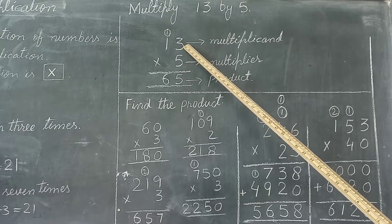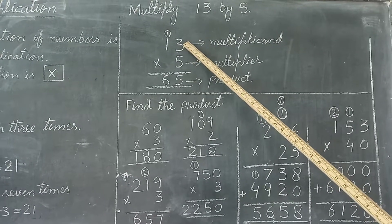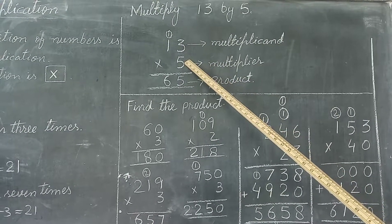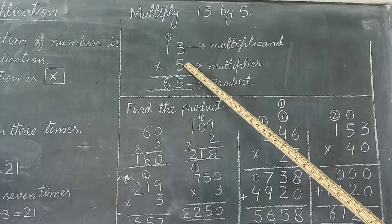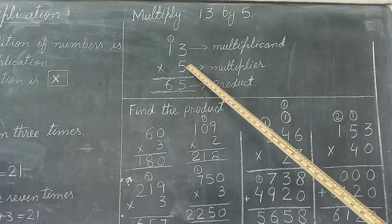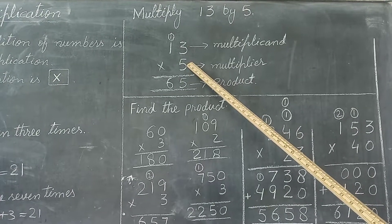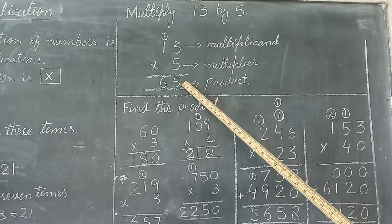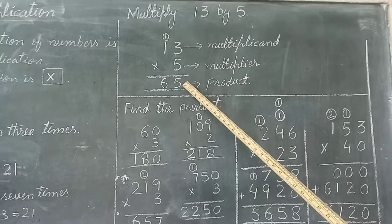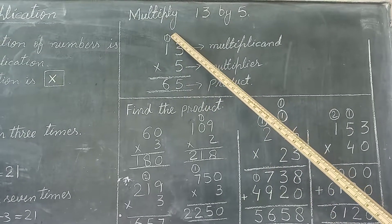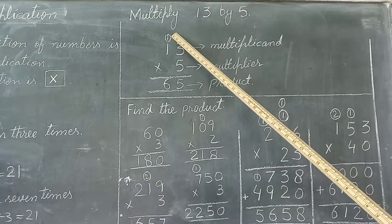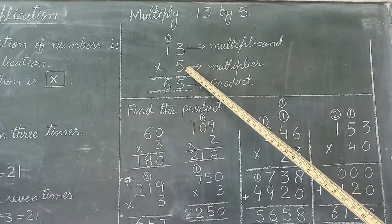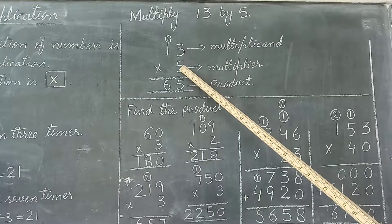Students, aap ye bhi yaad rakhein ki aap three ka table five tak bhi parh sakte hain — dono soorat mein aapke paas answer aata hai. Aapne ones digit place kiya aur 10th digit ko aapne carry le liya. Aapne next step mein kya karna hai — aapne 10th digit se multiply kiya.